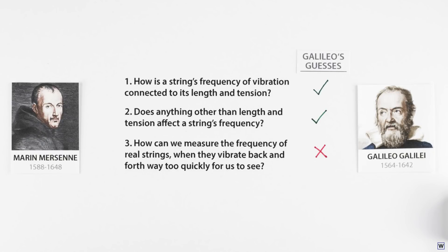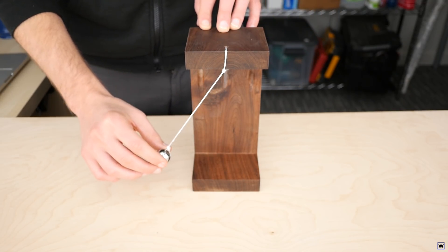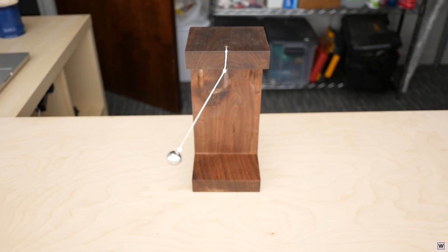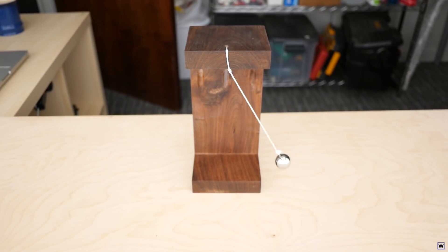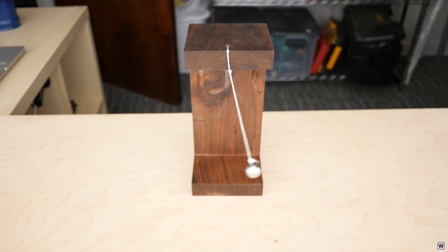In the early 1600s, the only really viable way to measure how frequently something was moving back and forth was counting. These counts could be compared to the most accurate timekeeping device of the day, the pendulum. Thanks to the work of Galileo, it was known that pendulums swing back and forth at a reasonably constant frequency.